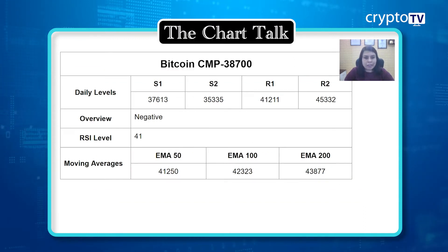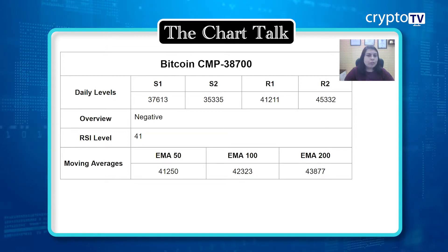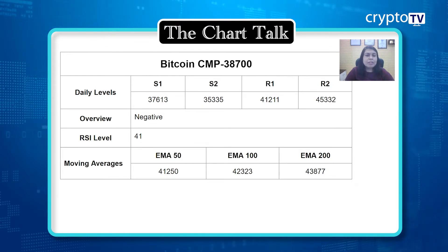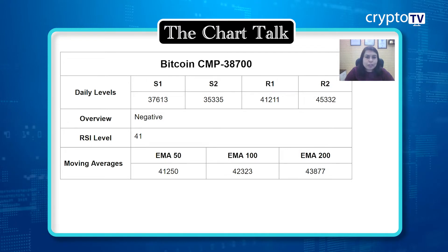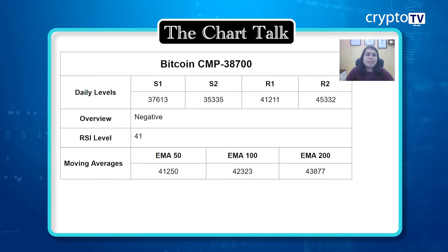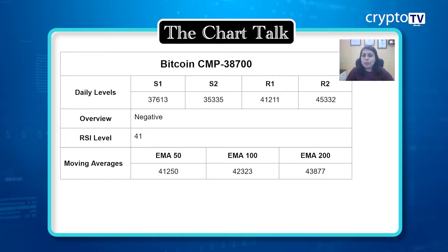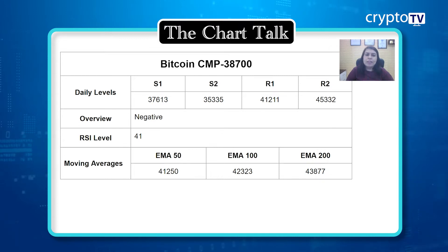If you look at the market price, Bitcoin is trading at $38,700. We have seen a sell-off from around the $40,000 level, because whenever the price reaches that $40,000 level we are getting weakness from there. Unless and until the price closes above that level, we can't say that the overall view is positive or that we've seen a change in the overall view.